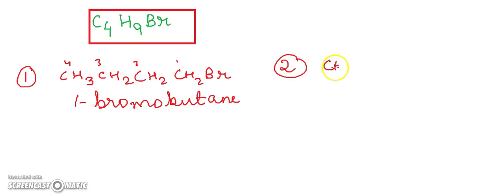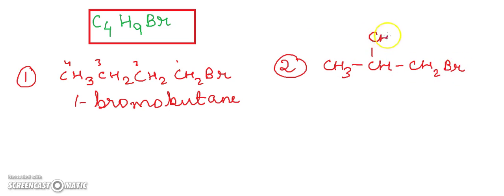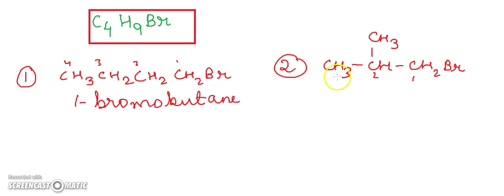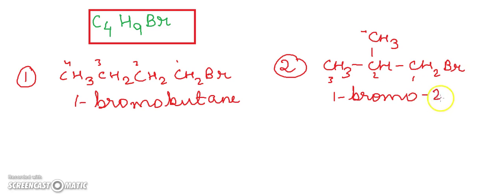The second isomer is CH3–CH(CH3)–CH2Br. Here, in the earlier compound we had a simple chain of carbon atoms, but in this second one we have a methyl substituent on the second carbon atom. The number of carbon atoms is still four: one, two, three, four. The name of this compound is 1-bromo-2-methylpropane.